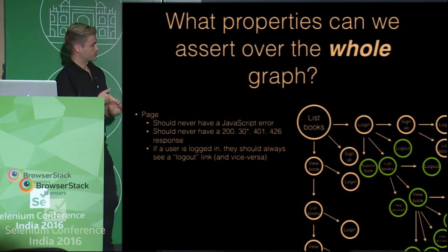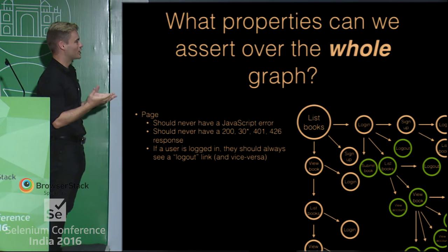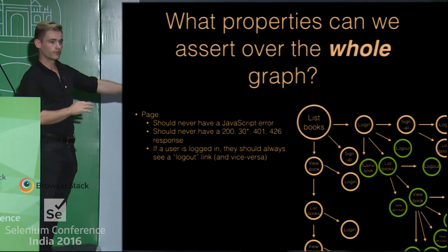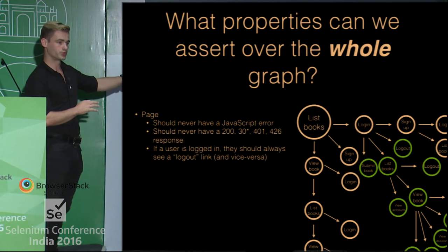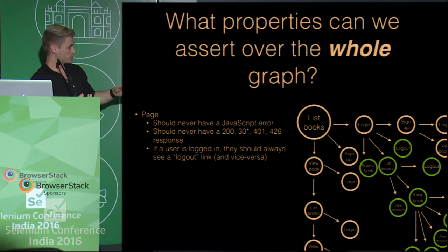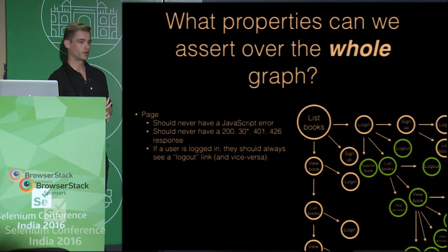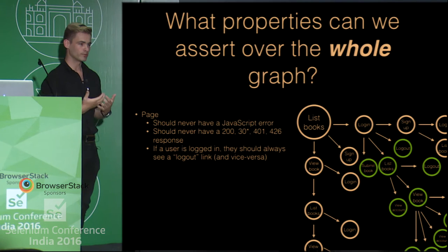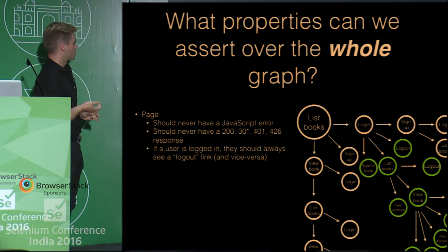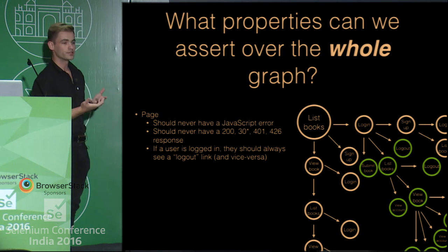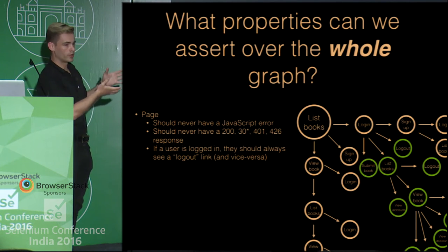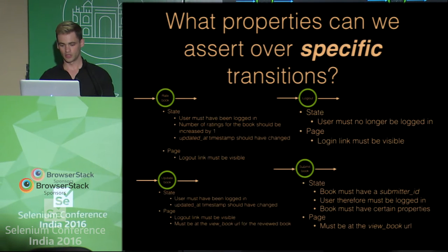There are two classes of properties that we can assert. One is about no matter where we are in the graph, we have certain properties we want to assert about the state. For example, as we're traversing it, we should never see a 500 error page. The user should never be able to do anything that causes a 500. Similarly, they should never be able to do anything that causes a JavaScript error. If the user is logged in, they should always see a logout link, and vice versa. There are all these fundamental basic properties we can assert no matter where we are on that graph.